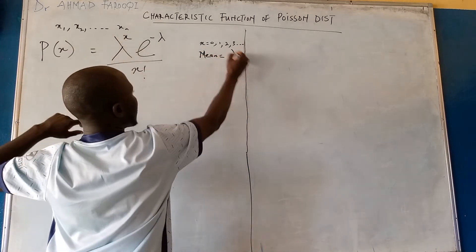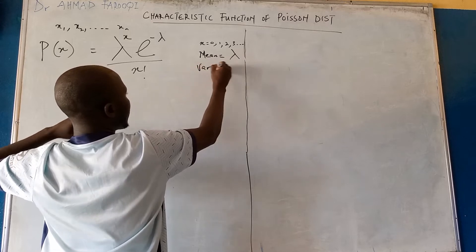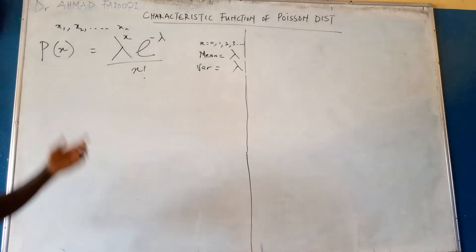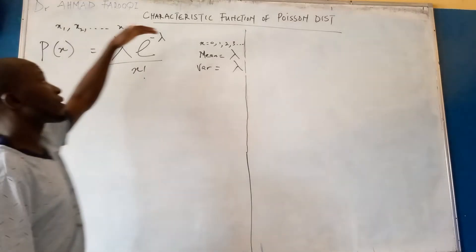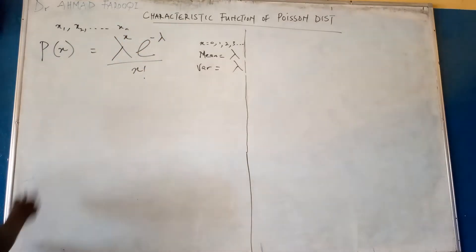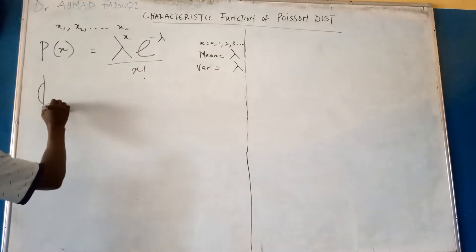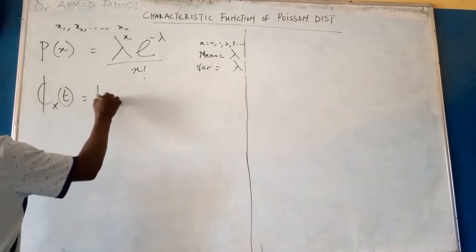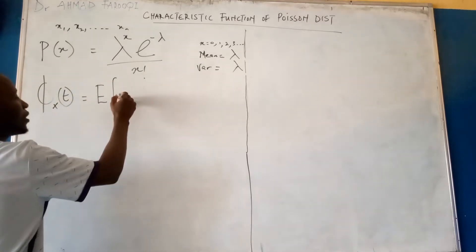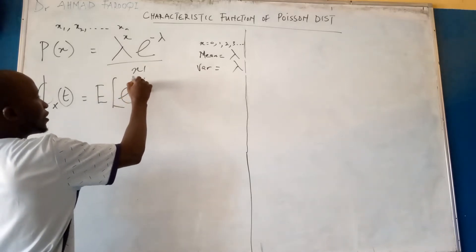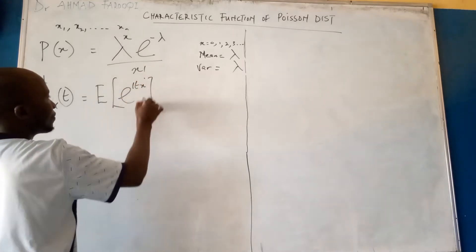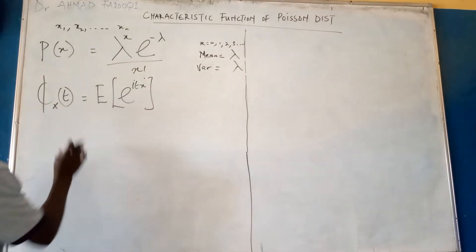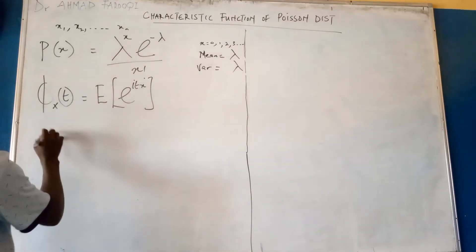The mean of this distribution is lambda and the variance is also lambda. What we are looking at today is the characteristic function. The characteristic function is given as phi x of t equals the expectation of exponential i t x.